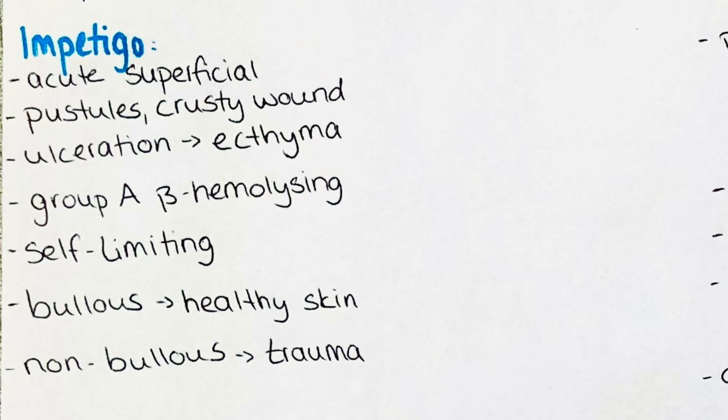The disease is usually self-limiting and resolves within two to four weeks. We differentiate two forms of impetigo: the bullous and the non-bullous form. Bullous impetigo is caused by staphylococcal toxins that make the epidermis shed its most superficial layer, and the bacteria can also invade healthy skin without requiring any trauma. Non-bullous impetigo requires a minor trauma which becomes infected and develops from a pink macule to a pustule and then into a crusty lesion.